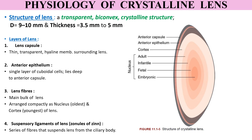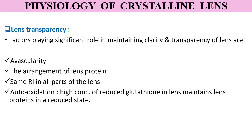Now let us see the physiology of the crystalline lens, the last and very important factor responsible for maintenance of a clear refractive media of the eye. The lens is a transparent biconvex crystalline structure with a diameter of 9 to 10 millimeters. The thickness of the lens varies with age, from 3.5 millimeters at birth to 5 millimeters at extreme age. The lens is made up of various layers: the lens capsule, a thin transparent hyaline membrane; the anterior epithelium, a single layer of cuboidal cells; and the lens fibers, which form the main bulk of the lens arranged compactly as nucleus and cortex. Finally, the suspensory ligaments, or zonules of Zinn, help the lens suspend from the ciliary body.